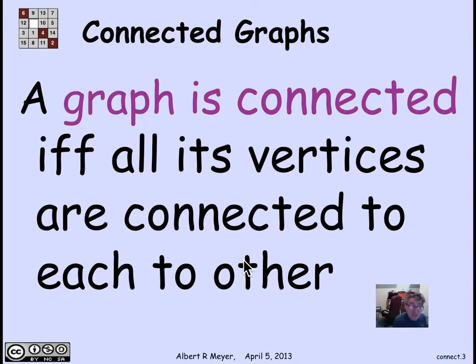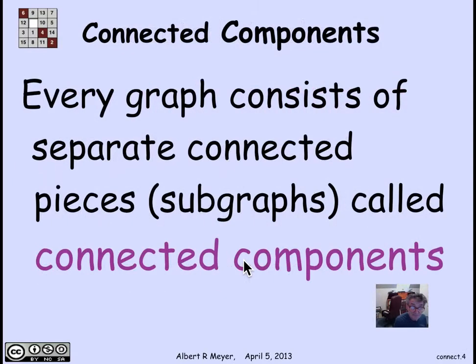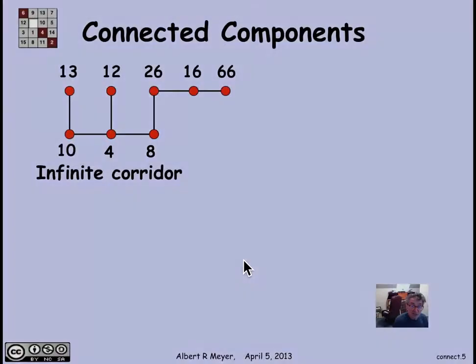A whole graph is said to be connected if all of its vertices are connected to each other. Now, every graph you can think of as broken up into the mutually connected pieces or subgraphs, which are called its connected components. So let's look at a simple example.